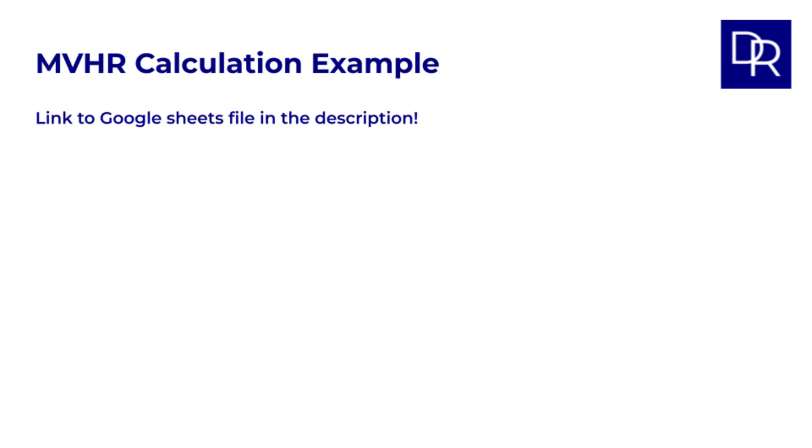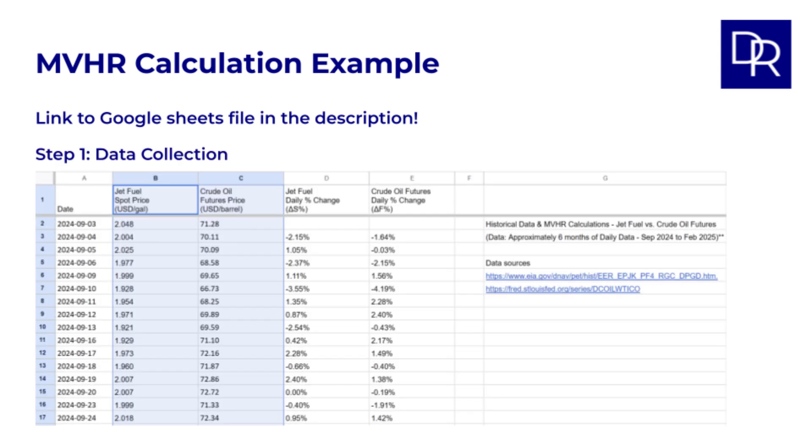Let's make this practical. How do we actually calculate and use the MVHR? In the description to the video, there's a link to a Google Sheets file where you can see all the details of the calculations which I will talk about in the next few minutes. I'm using Google Sheets as I think this will allow anyone to access it without needing Excel. So if you want, you can download the file and use it in Excel or whatever is your favorite spreadsheet app. So, step one. Data collection. We need historical price data for both jet fuel spot prices and crude oil futures prices. I gathered daily data for 6 months from September 2024 to February 2025. The spot jet fuel prices are from the US Energy Information Administration, and the crude oil futures prices are from the St. Louis Fed.